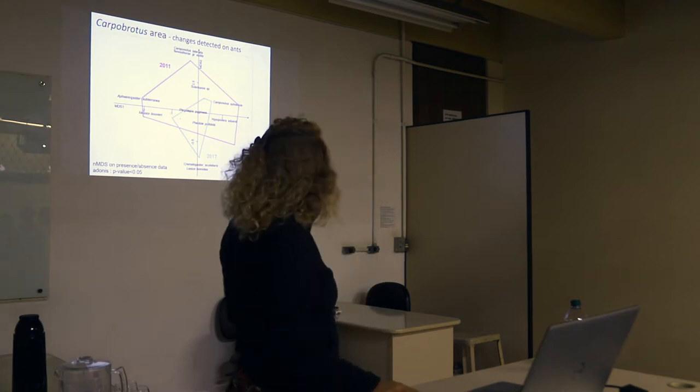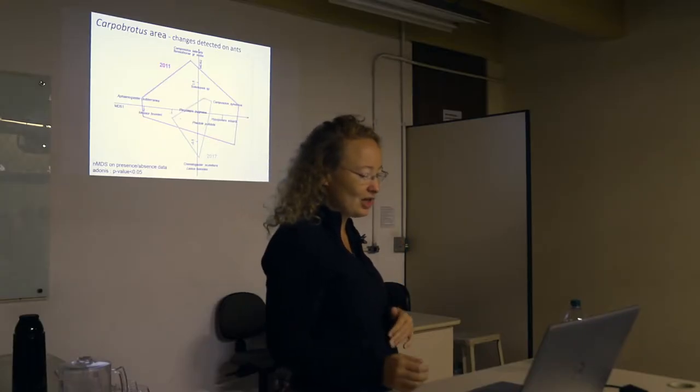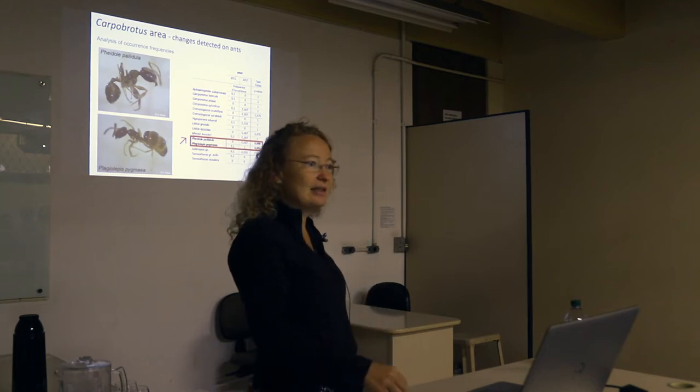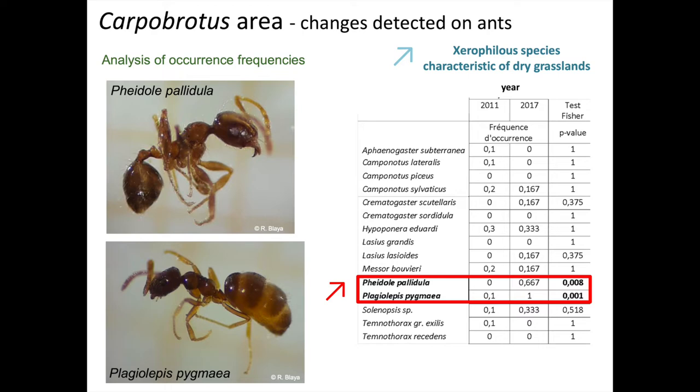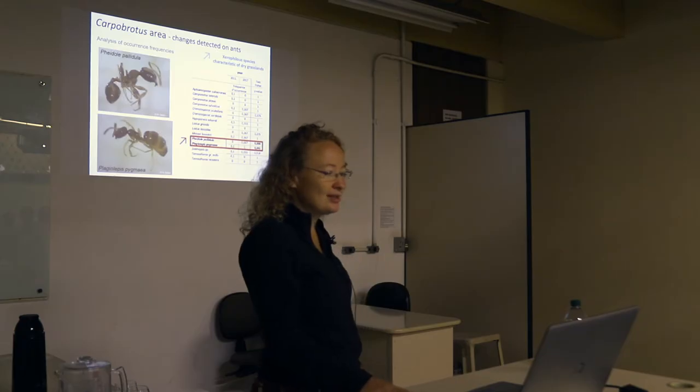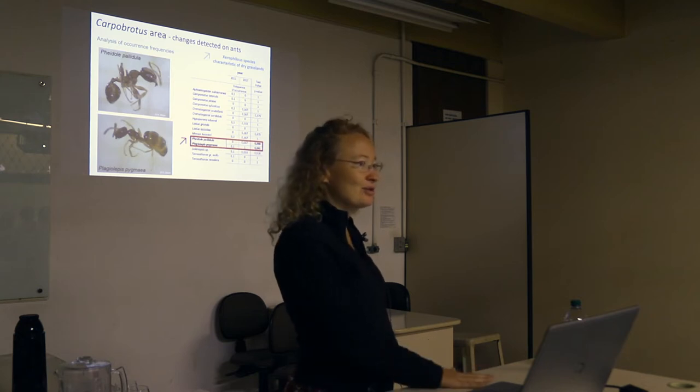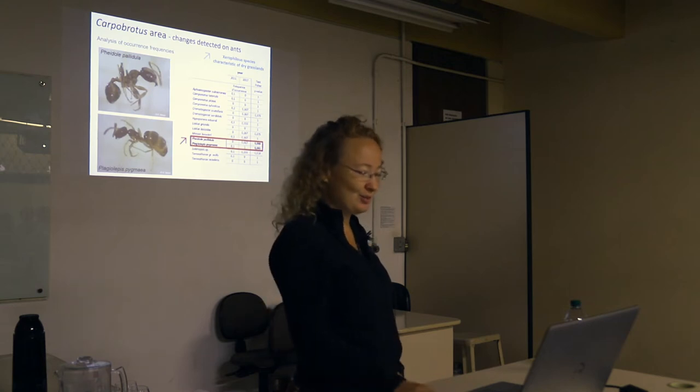For the ants, you can see you have a difference between 2011 before eradication and 2017 after eradication. This is mostly due to two species which are significantly increasing in occurrence between the two years. It's Pheidole pallidula and Plagiolepis pygmaea. Both species are xerophilous species that are more characteristic of dry grasslands, and it makes sense because the vegetation changed a lot towards the grasslands. So we have more xerophilous species.